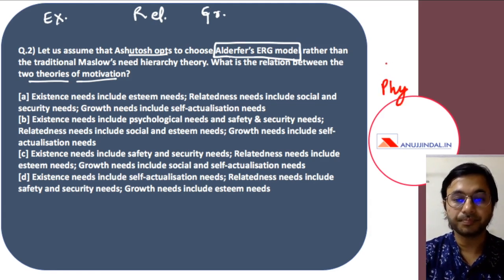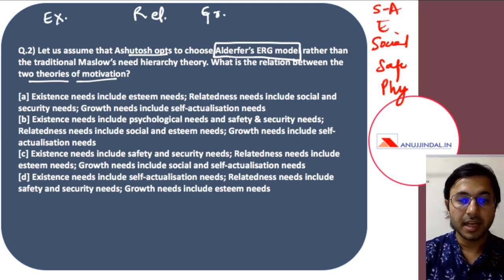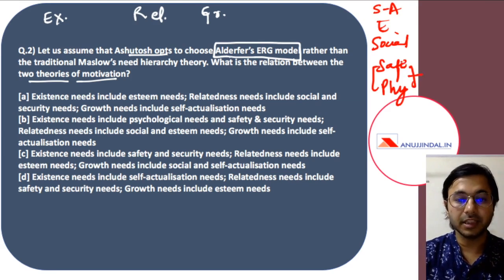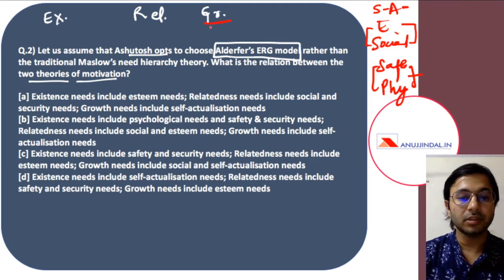Maslow's five needs are: physiological needs, safety and security needs, social needs, esteem needs, and self-actualization needs. In Alderfer's ERG theory, existence needs correspond to physiological and safety needs clubbed together. Relatedness needs correspond to social and esteem needs. And growth needs correspond to self-actualization needs. So growth needs are self-actualization needs.